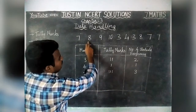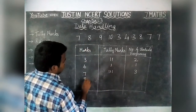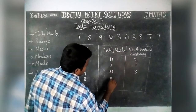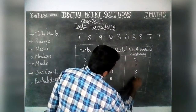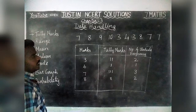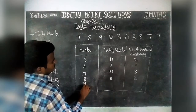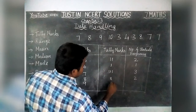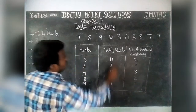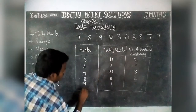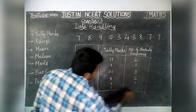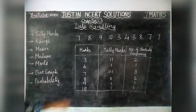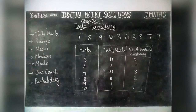Next, 8 marks — 2 students got it. Then 9 marks — only 1 student. And in 10 marks, also 1 student. So this is the method to write tally marks in a tabular column.